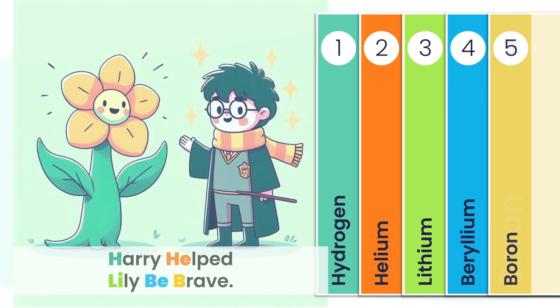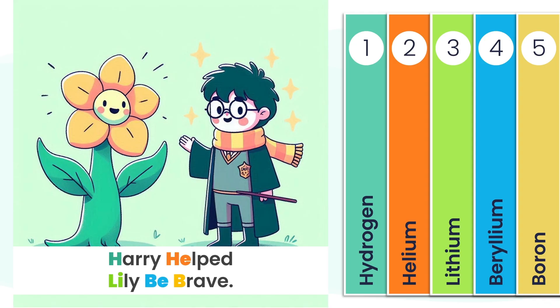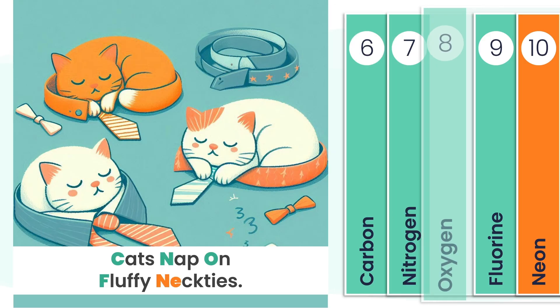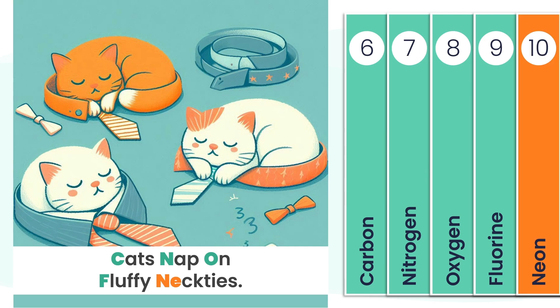That's the first five, each powerful in its own way. Now it's time to decode the next set of elements — new names, new uses, and another memory trick to lock them in. To remember elements 6 to 10, just think: cat snap on fluffy neckties. Each word's bold letter matches an element symbol: carbon, nitrogen, oxygen, fluorine, and neon.